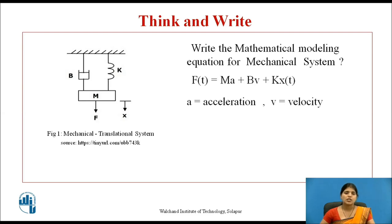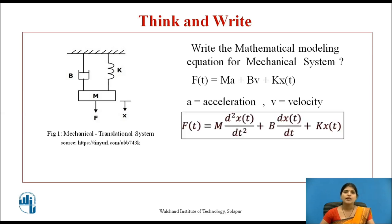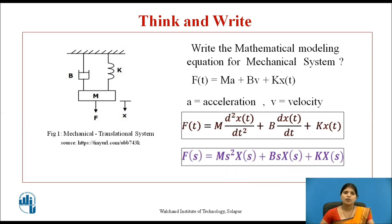Where A is the acceleration, V is the velocity, and X(t) is the displacement. So the equation becomes: F(t) = M·(d²X(t)/dt²) + B·(dX(t)/dt) + K·X(t). Taking the Laplace transform, the equation becomes: F(s) = Ms²X(s) + BsX(s) + K·X(s).